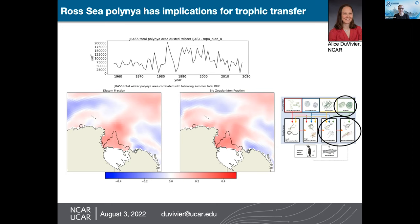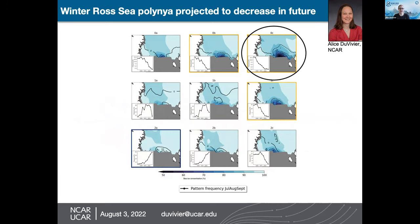We've also looked at how polynias might change in the future, using the CESM Large Ensemble of climate model runs. Using machine learning to identify patterns, I can see the Ross Sea polynia pattern — open ocean by the polynia — but the frequency of this pattern decreases sharply over time. We think it's related to atmospheric circulation, and we're examining regional changes in polynias going forward.